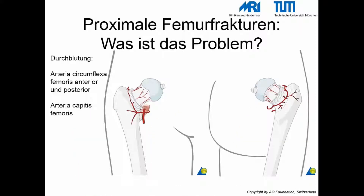Das zentrale Problem proximaler Femurfrakturen ist die Blutversorgung des Femurs. Diese tritt zum einen über die Arteria Capitis Femuris in den Hüftkopf ein, zum anderen über die beiden Circumflexarterien von anterior und posterior. Ab einem gewissen Alter ist die Arteria Capitis Femuris obliteriert, sodass die alleinige Blutversorgung über die beiden Circumflexarterien erfolgt. Liegt eine Fraktur proximal des Einstrahlens dieser Arterien vor, ist die Blutversorgung des Femurkopfes aufgehoben und es droht eine Hüftkopfnekrose.